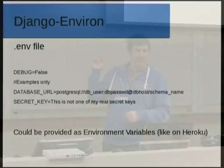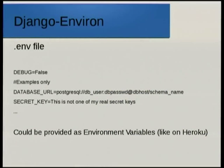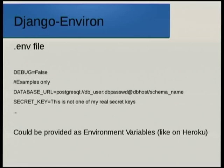Here's an example .env file. Debug is set to false. The database URL is set there, passing through the database user, password, hostname, and schema. It supports Geo Django databases and everything like that. You don't have to have a .env file — you can set them as environment variables, say in your Circus config. Heroku passes configuration through environment variables too, so Django-environ provides quite a lot of flexibility.